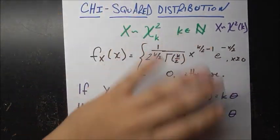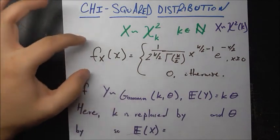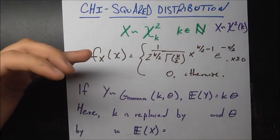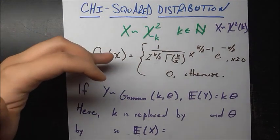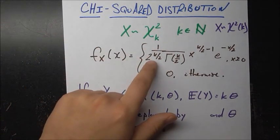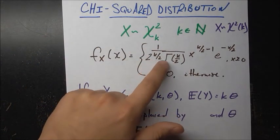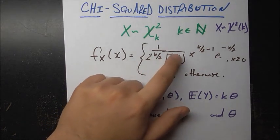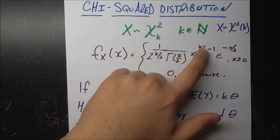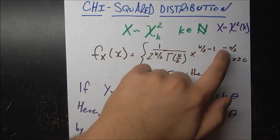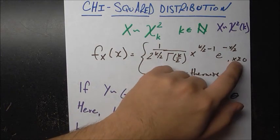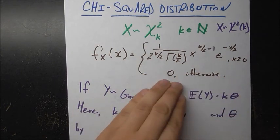This is our definition. The PDF is given as f_X(x) = 1 over (2^(k/2) · Gamma(k/2)) · x^(k/2 - 1) · e^(-x/2), and this holds for all x greater than or equal to 0, and is 0 otherwise.